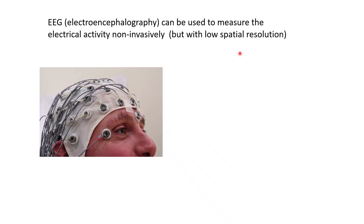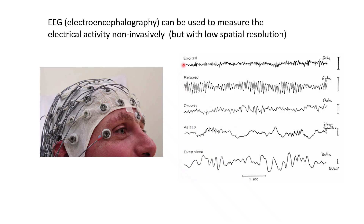Penfield's experiments tell us about the role of electricity in the brain, and we can directly measure this electrical activity using different techniques. For instance, using EEG — electroencephalography — as shown here, we can place electrodes on the scalp to measure the electrical activity reaching the scalp at different parts of the skull. This gives very good temporal resolution, but the spatial resolution is somewhat lower because the electricity gets diffused as it passes through the skull, and each electrode picks up signal from a relatively large area within the brain.